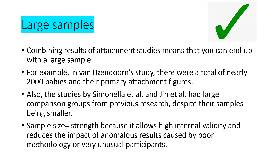Now moving to your evaluation — AO3 marks. A strength is large samples. The researchers are combining results of attachment studies, resulting in a large sample. Van Ijzendoorn's meta-analysis included nearly 2000 babies and their primary attachment figures. The studies by Simonella et al. and Jun et al. also had large comparison groups from previous research. This large sample size allows high internal validity — are we measuring what we intend to measure — and also reduces the impact of anomalous results caused by poor methodology or unusual participants.